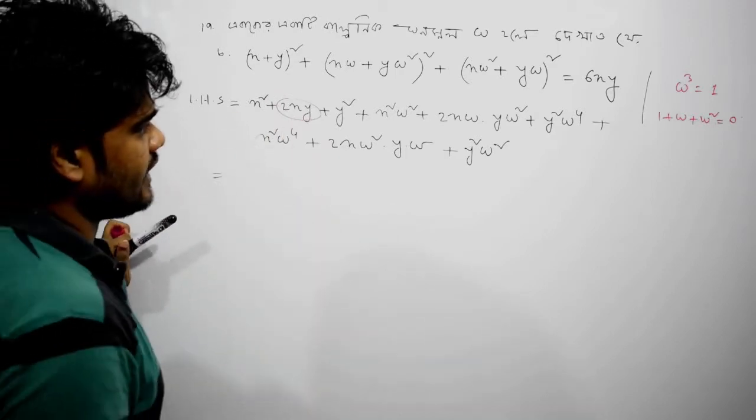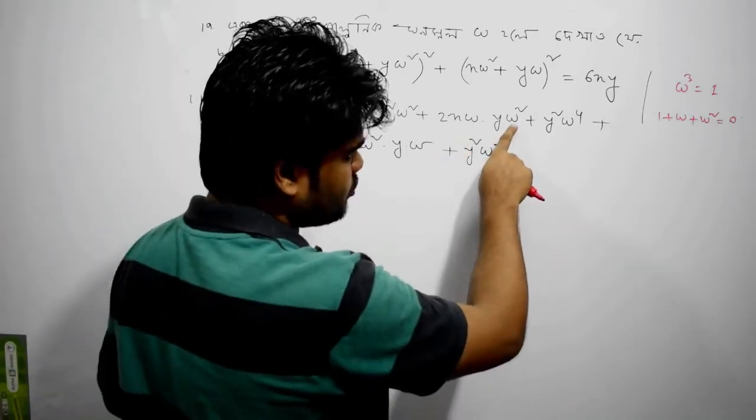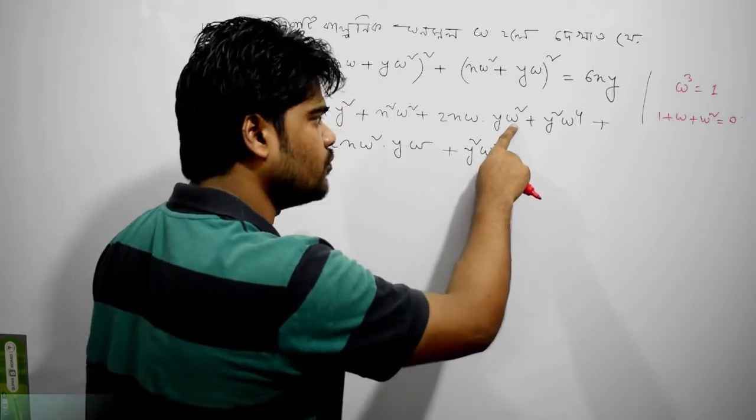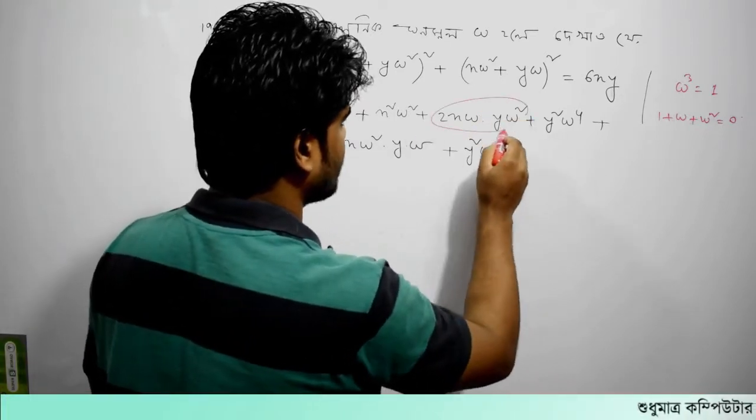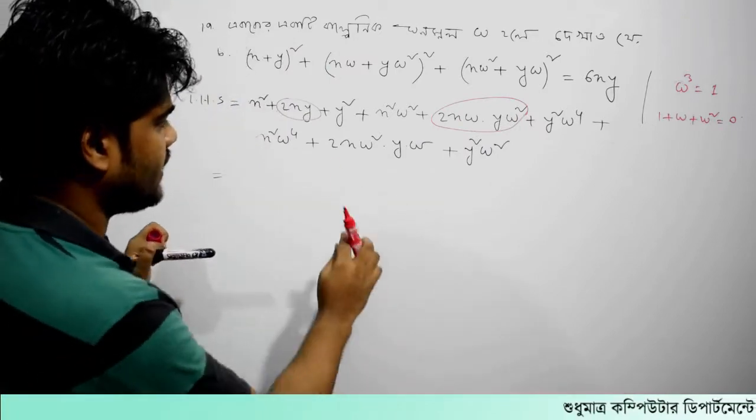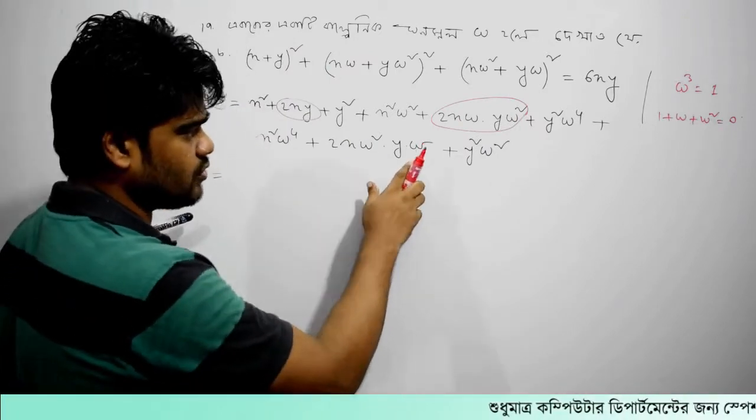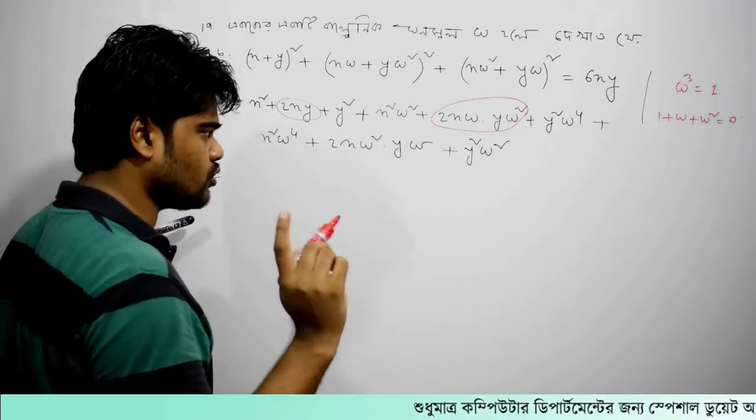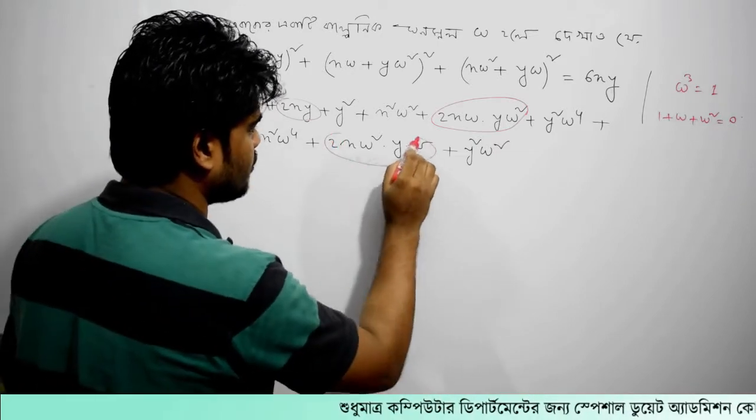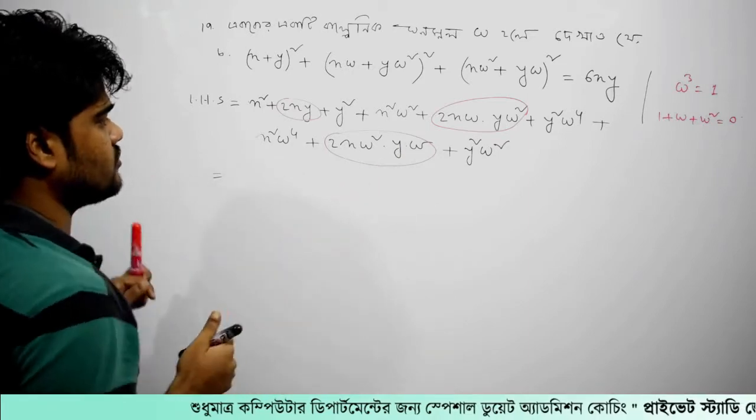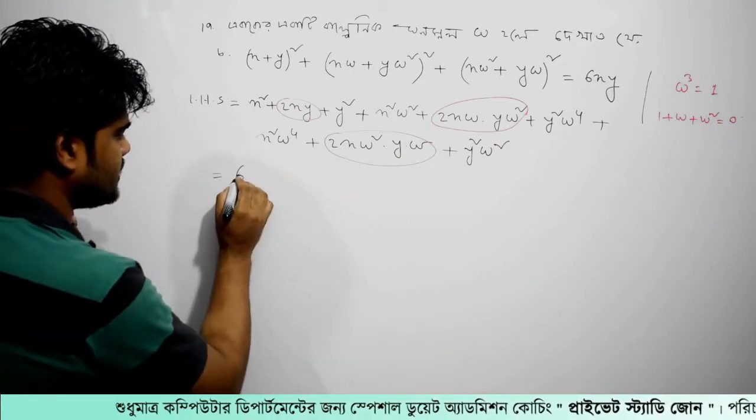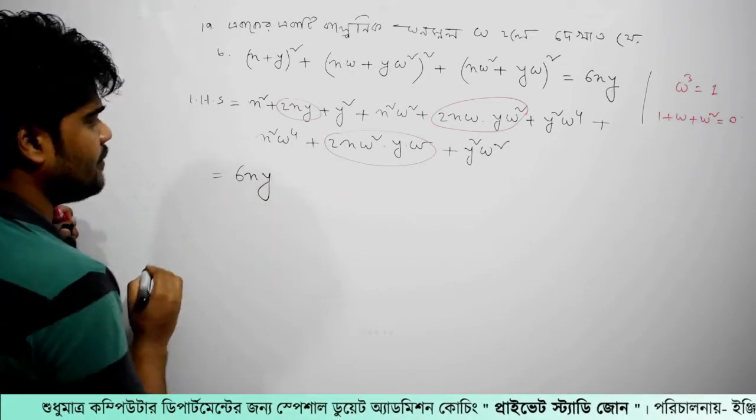6xy, let's go to the calculation. This is 1, 2xy omega and omega which is the same way omega cube, 1, 2xy omega square omega cube, 2xy. 6xy, I am going to add